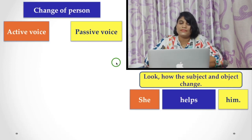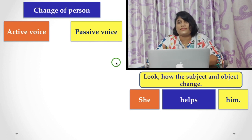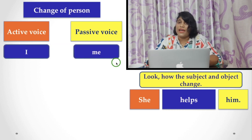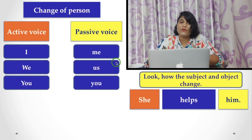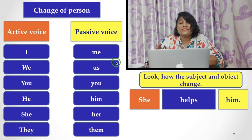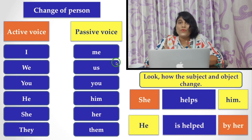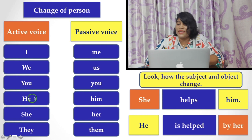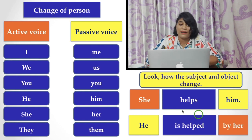Now let's see the change of person — this is very vital. In active voice, the subject or object uses certain pronouns, but in passive construction you have to change them. If the active voice subject is 'I,' it becomes 'me' in passive. 'We' becomes 'us.' 'You' stays 'you.' 'He' becomes 'him.' 'She' becomes 'her.' 'They' becomes 'them.' For example: 'She helps him.' 'She' is the subject and 'him' is the object. In passive construction: 'He is helped by her.' 'Him' becomes 'he' as subject, and 'she' becomes 'her' as object.